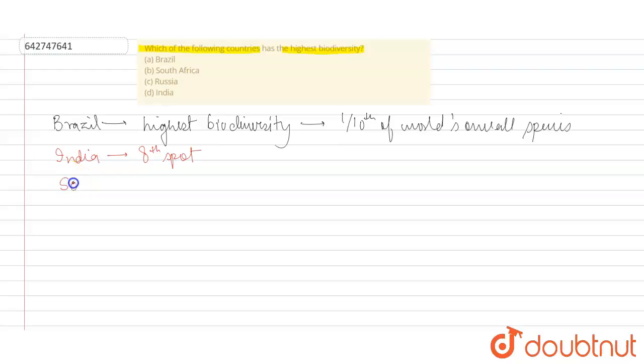And after this, we have South Africa. South Africa is a country which occupies the 13th spot in the list of having high biodiversity.